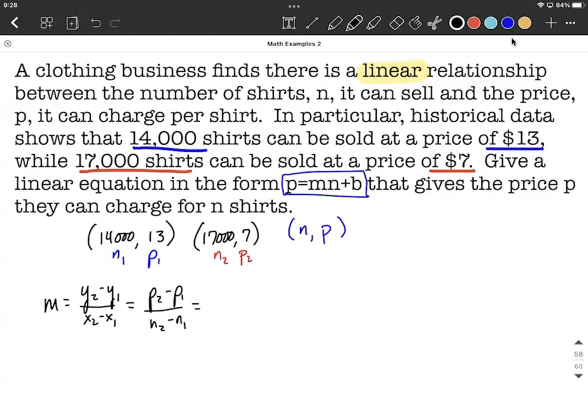Just kind of filling in what we know from our ordered pairs, we can say that's 7 minus 13 over 17,000 minus 14,000. A little bit of simplifying down, and we should get negative 6 over 3000, which will reduce even further to negative 1 over 500.